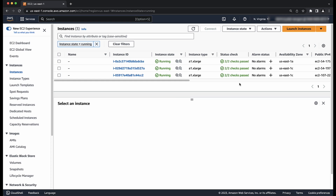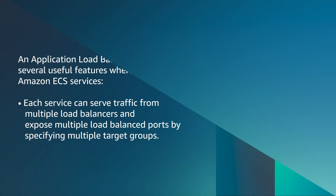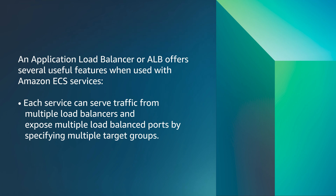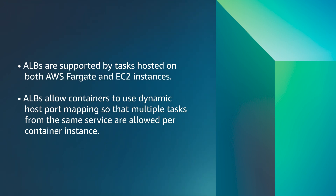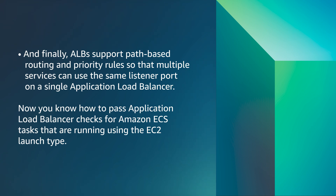Before we finish, note that it is a best practice to use load balancers in your deployment. An application load balancer offers several useful features when used with Amazon ECS services. Each service can serve traffic from multiple load balancers and expose multiple load balancers by specifying multiple target groups. ALBs are supported by tasks hosted on both AWS Fargate and EC2 instances. ALBs allow containers to use dynamic host port mapping so that multiple tasks from the same service are allowed per container instance. ALBs support path-based routing and priority rules so that multiple services can use the same listener port on a single application load balancer. Now you know how to pass application load balancer checks for Amazon ECS tasks running using the EC2 launch type. Thanks for watching and happy cloud computing from all of us here at AWS.